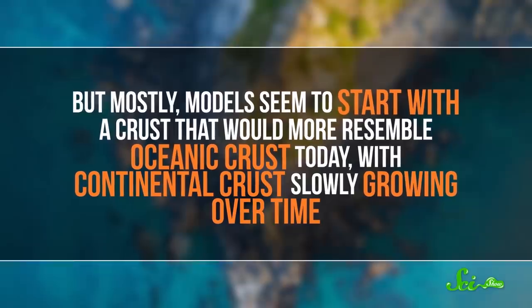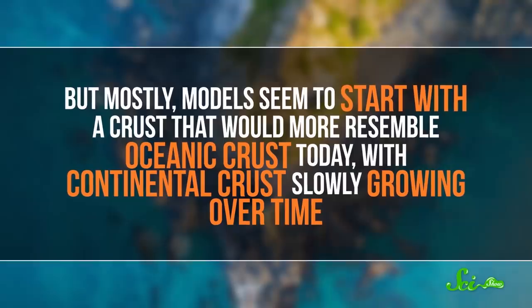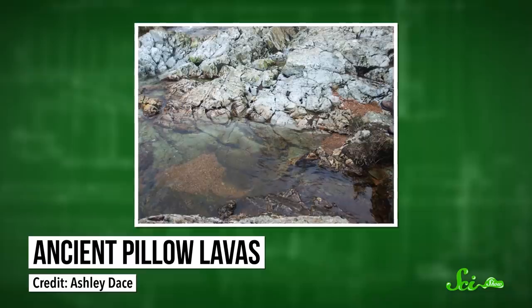So there are a lot of interpretations. But mostly, models seem to start with a crust that would more resemble oceanic crust today, with continental crust slowly growing over time. The exact date when the first continental crust appeared is one of the big questions in geoscience. Some models say it started growing almost immediately; others say it didn't really get going until about 3.6 billion years ago. Depending on which model is right, early Earth might have been a water world. We think the oceans had to have existed by around 3.8 billion years ago, based on evidence like ancient pillow lavas dated to around that time, which only form when lava flows into water. So if continental crust hadn't formed by then, there would have been a point in time at which Earth was indeed an ocean world where land did not exist. Don't take land for granted — we could all be fish.